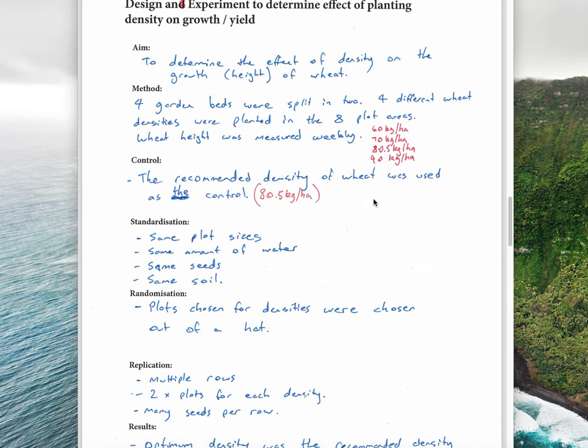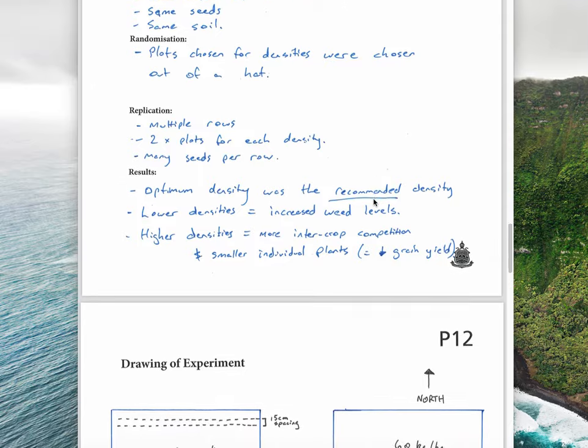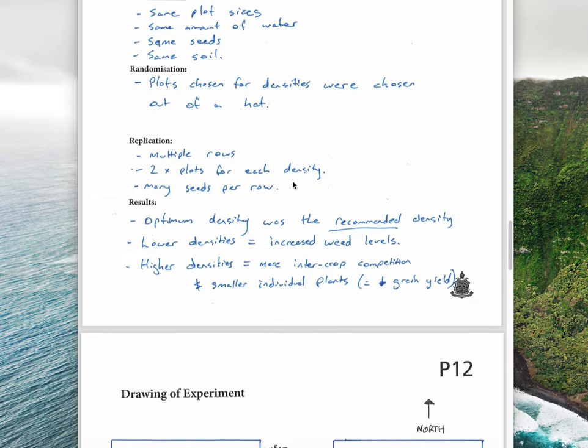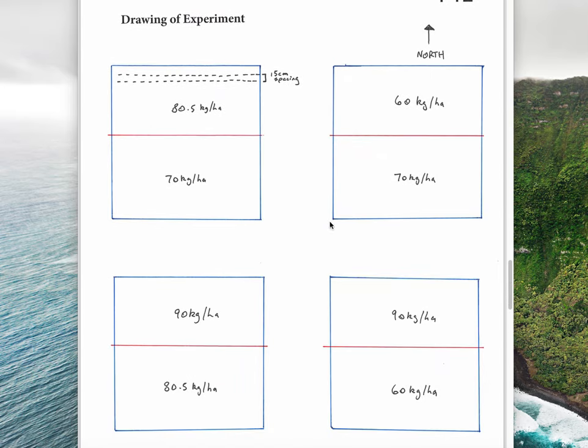You can see this diagram. We had four garden beds split in two. We randomly chose the location by picking numbers out of a hat, which is randomization. We had 15 centimeter spacing between rows, with eight rows in each half of a garden bed. Each density was planted twice, as you can see. If you were answering a question, it might be helpful to throw this diagram in on the side.